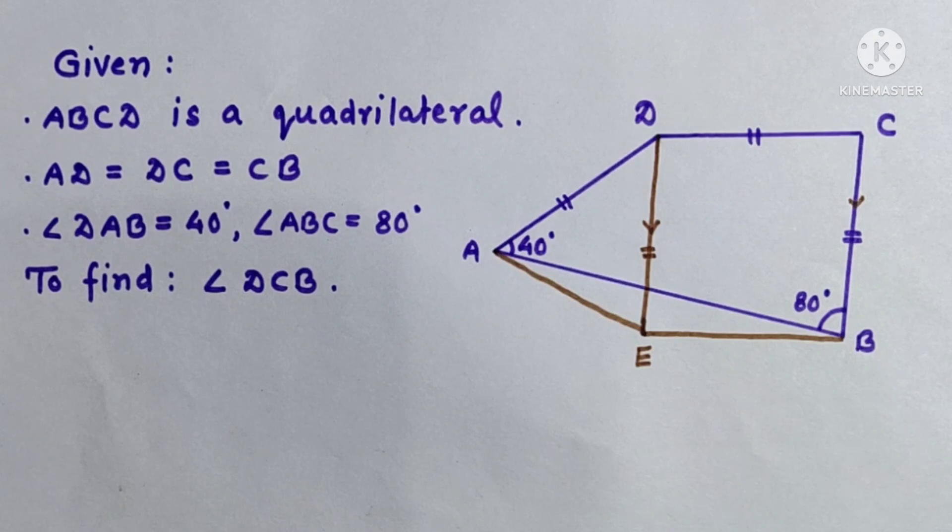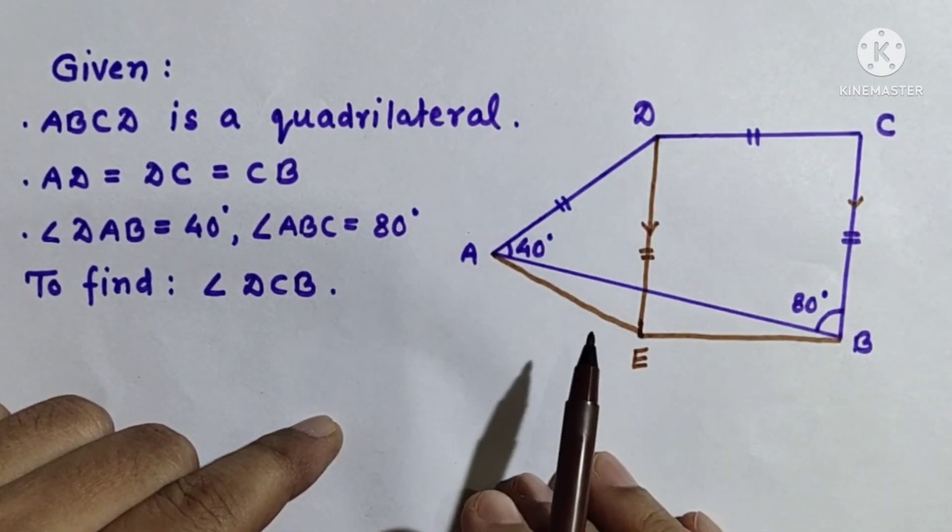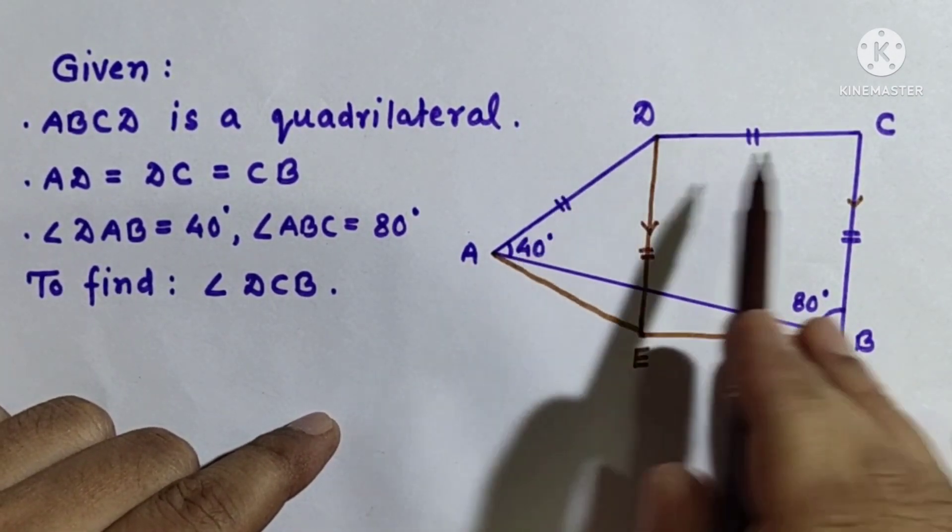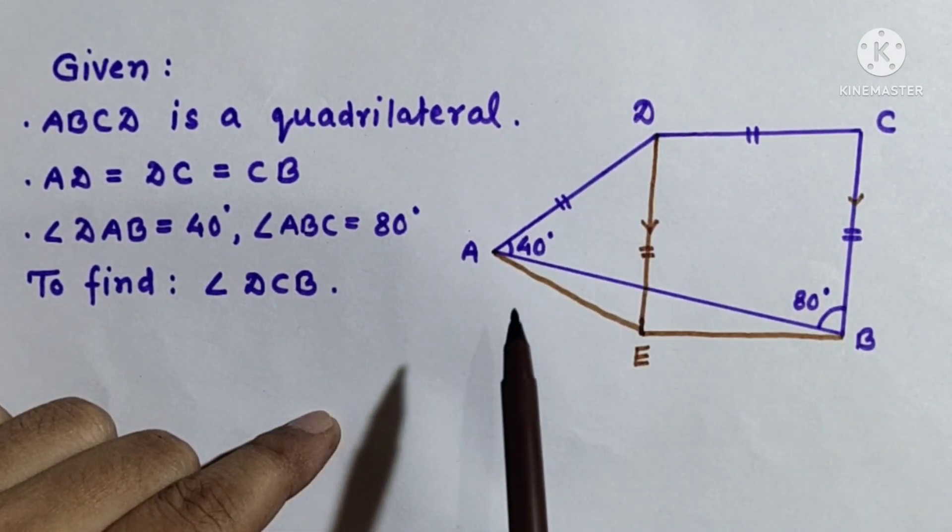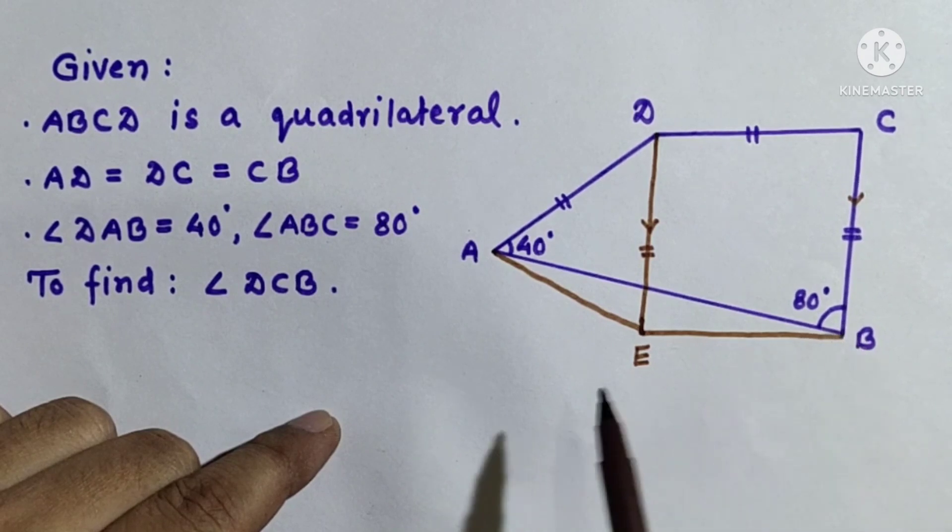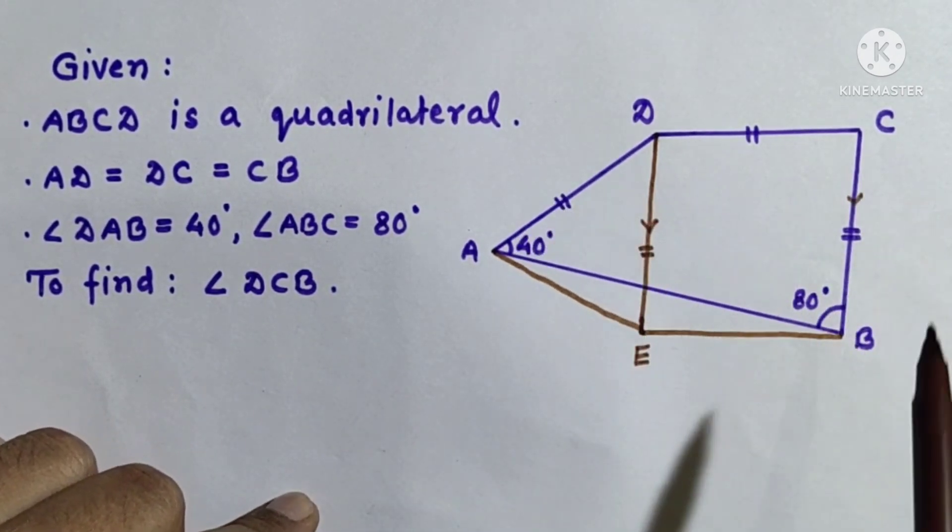We are given that ABCD is a quadrilateral such that AD is equal to DC is equal to CB, angle DAB is equal to 40 degree and angle ABC is equal to 80 degree, and we have to find the value of angle DCB.